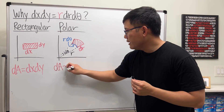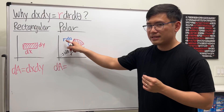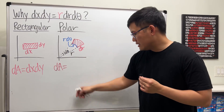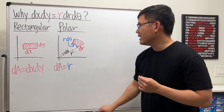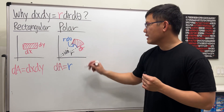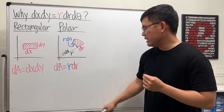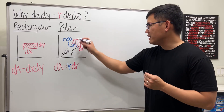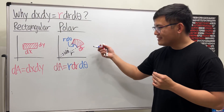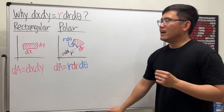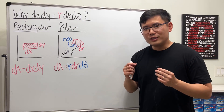So now you can see that dA is simply dr times r dθ. This is the reason why we have the extra r — we get r dr dθ. That's the geometric explanation.